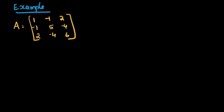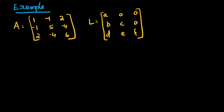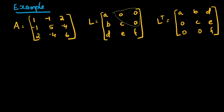Let's see an example. A is equal to [1, -1, 2; -1, 5, -4; 2, -4, 6], which is a symmetric matrix. We assume L as [A, 0, 0; B, C, 0; D, E, F], a lower triangular matrix where all elements above the diagonal are zero. L-transpose is the transpose of this matrix, and we need to find the values A, B, C, D, E, F.